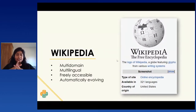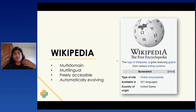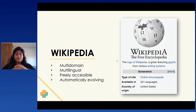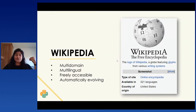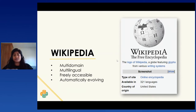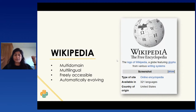The first thing that comes to mind is why Wikipedia? It's basically because it's got loads of data, and the nature of that data is cross-domain — it's got different kinds of data and it's multilingual, containing data from more than 300 languages. It's also freely accessible and automatically evolving because the data in Wikipedia is crowdsourced. All these things make Wikipedia a really rich, informative database that we can leverage for NLP applications.